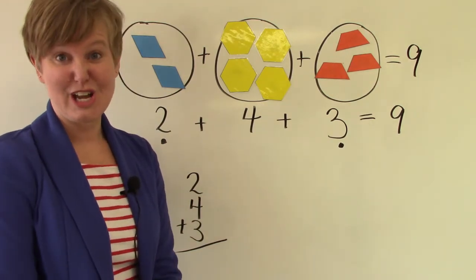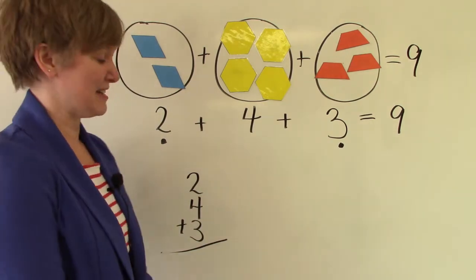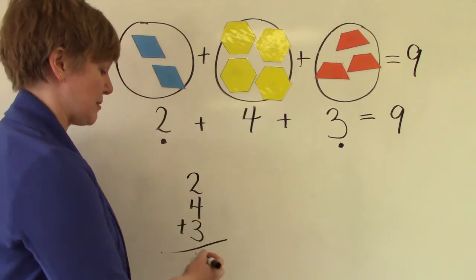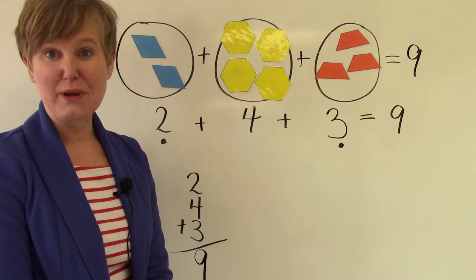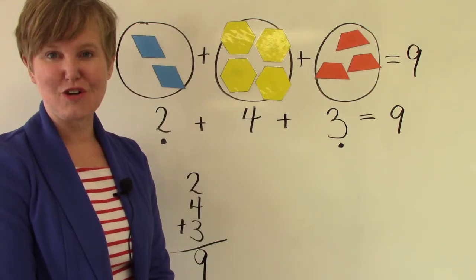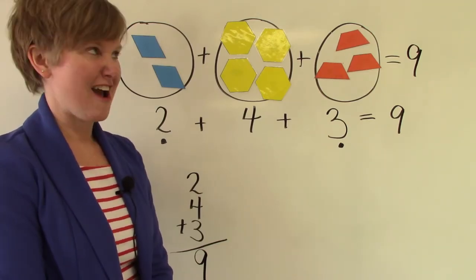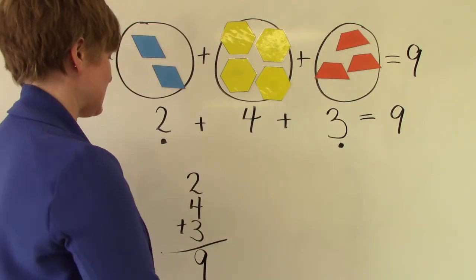Now that I've checked it, I'm very sure that's the right answer. Two plus four plus three is nine. When we did that problem, we added the two and the three together first. Let's try another two numbers instead.